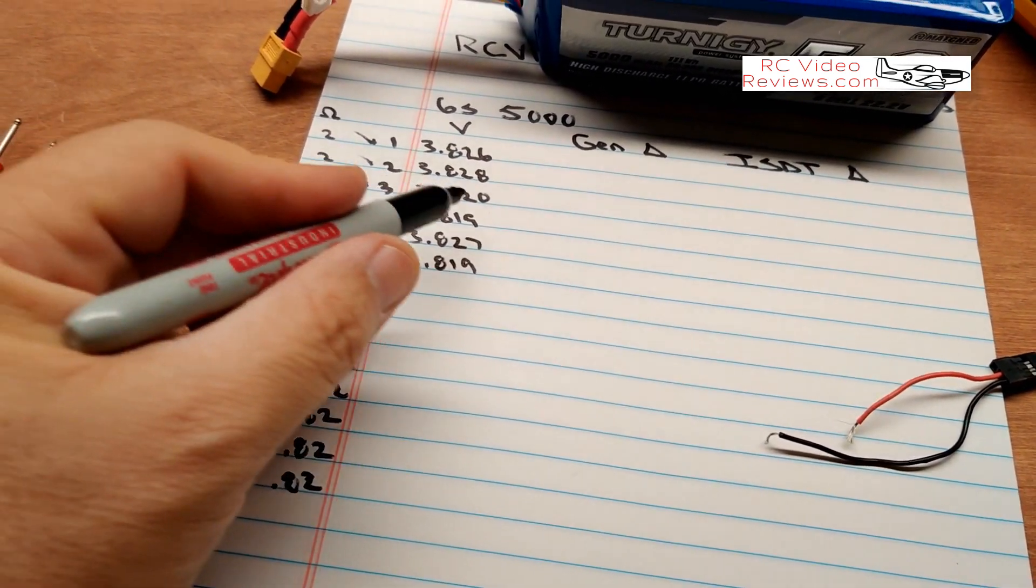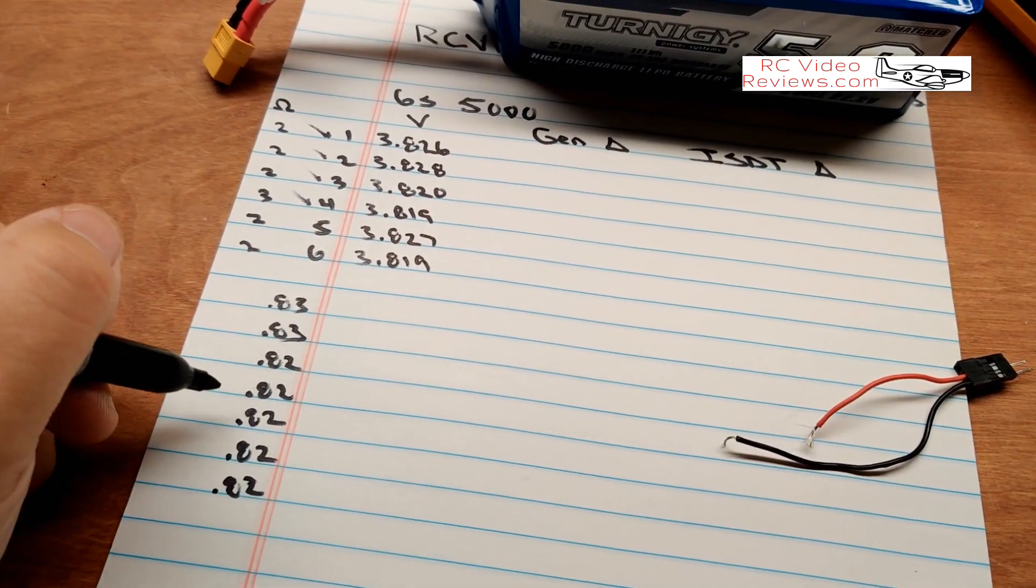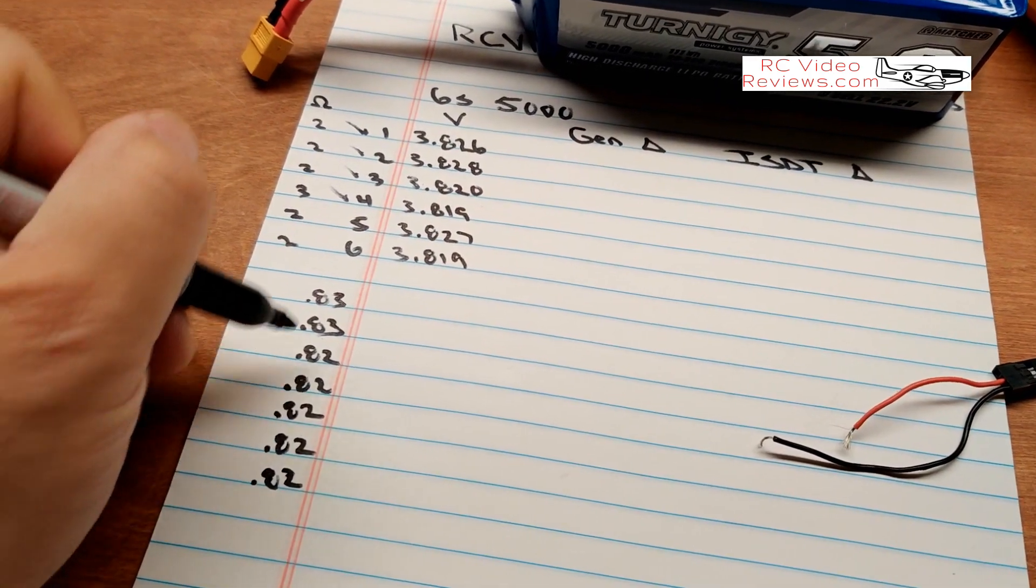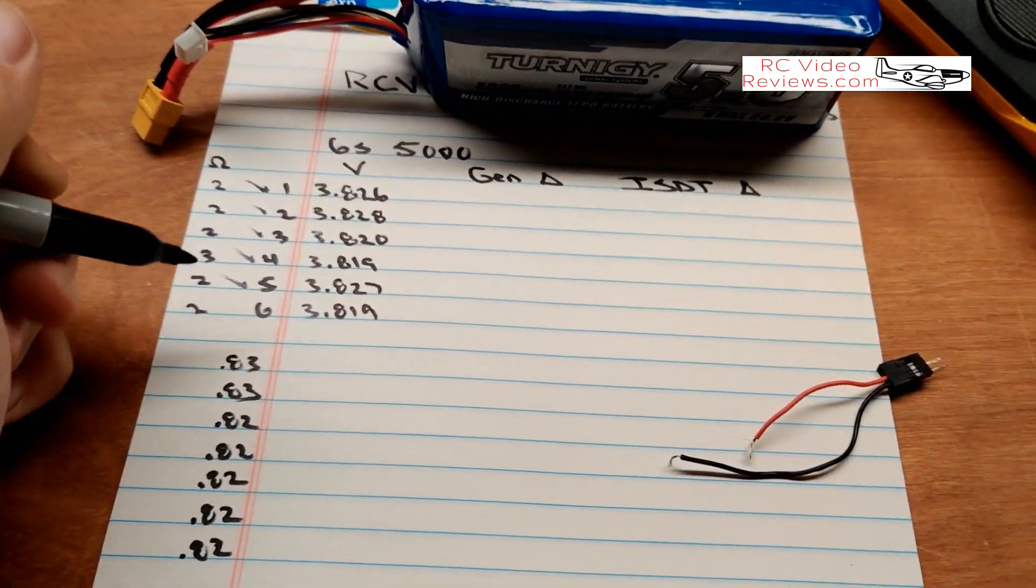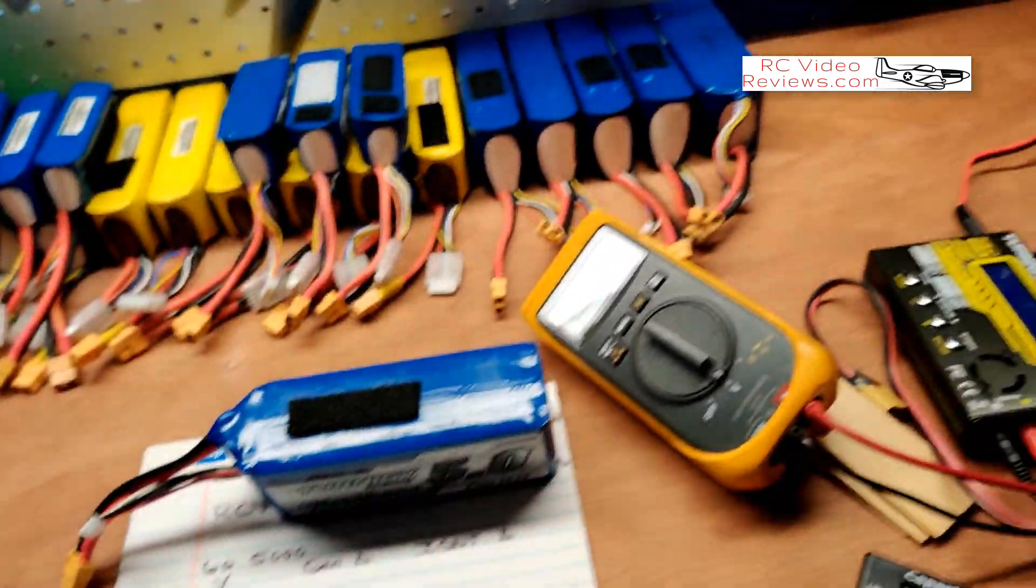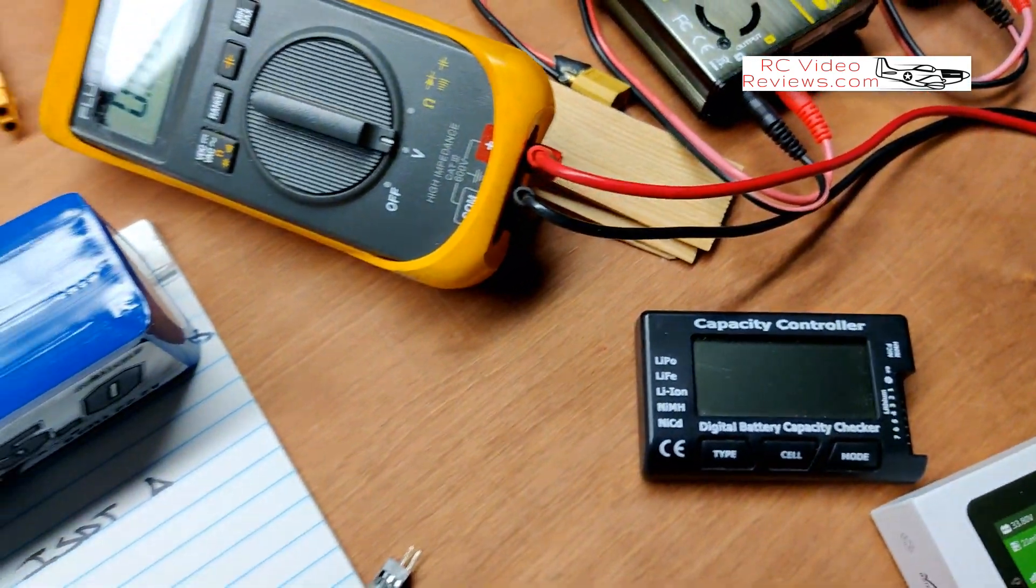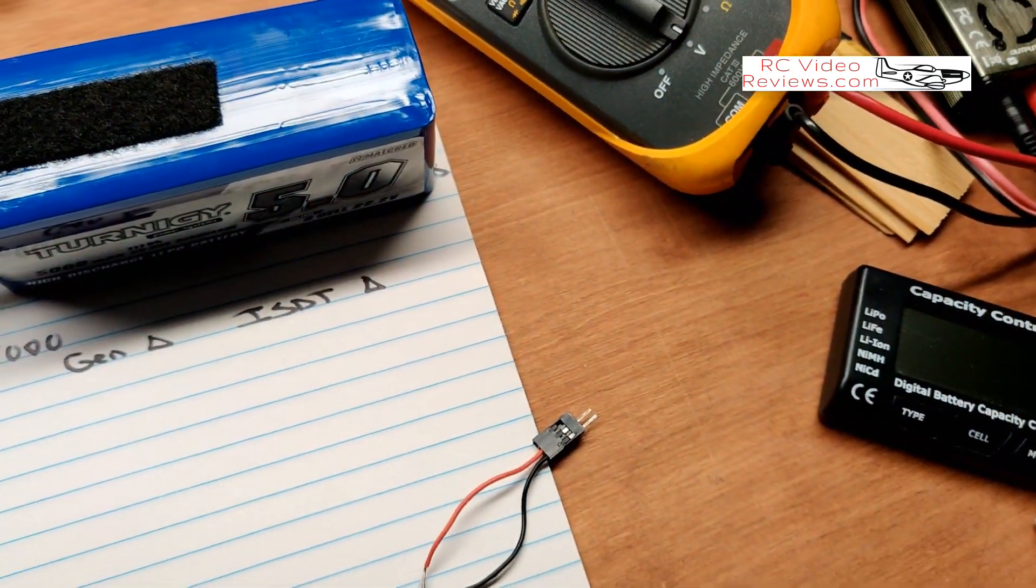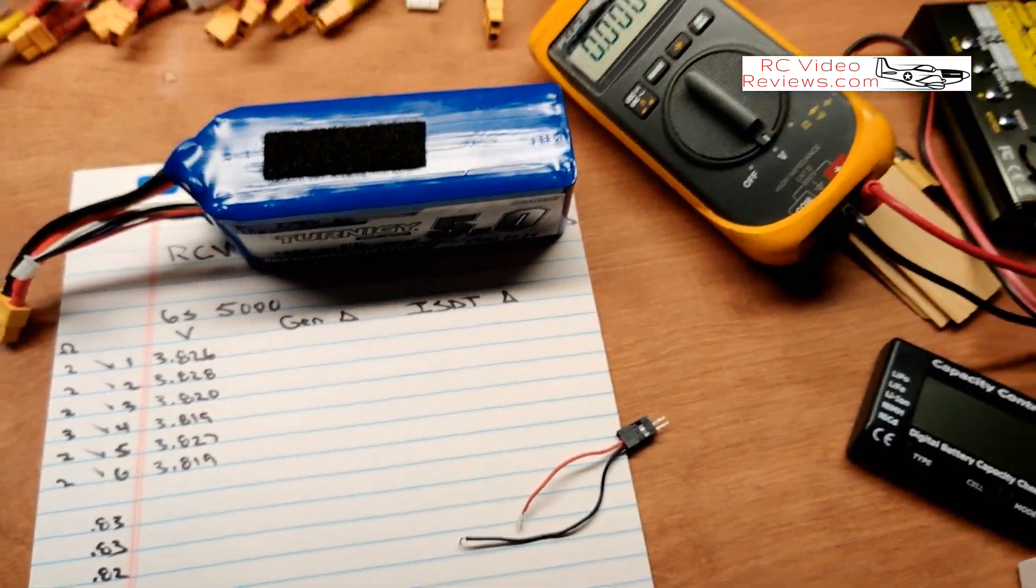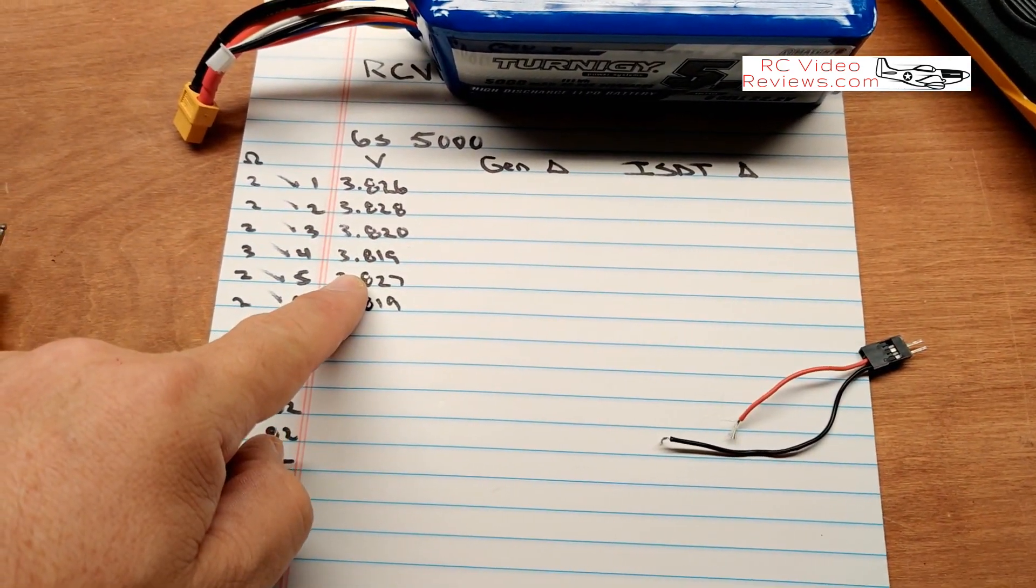3.819, if you round that up on number four, that's accurate. And then 3.827, if we round down, that is 3.82, that's accurate. And then 3.819 which rounds to 3.82, that's accurate. So what that tells me is I trust the iCharger and I trust my voltmeter. They both came up with readings that are equal, basically. So we're going to work from there with the assumption that this baseline is accurate.